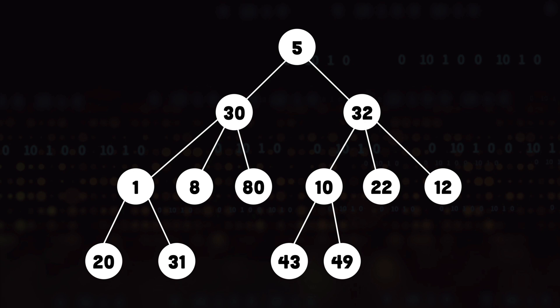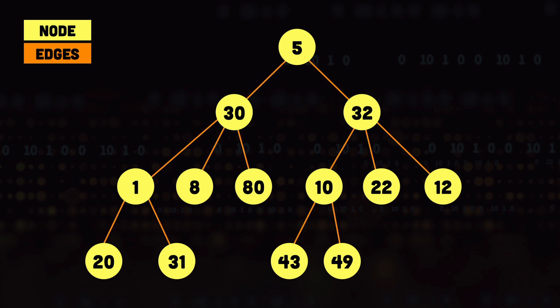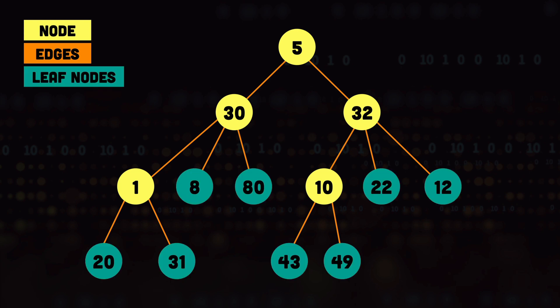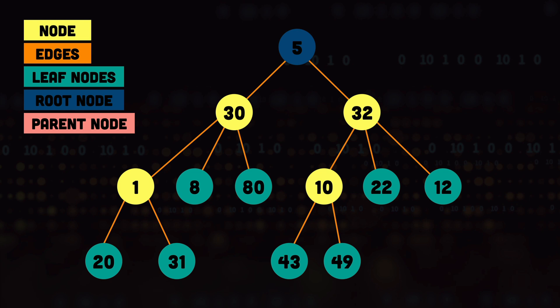Here we have the representation of a tree data structure. The elements of a tree are called nodes. The path connecting two different nodes is called an edge. The nodes at the end of the tree which do not have any children are called leaf nodes. The first node is called the root node, and the node above any node is called the parent. For example, 1 is the parent of node 20, and 30 is the parent of node 1 and the grandparent of node 20.